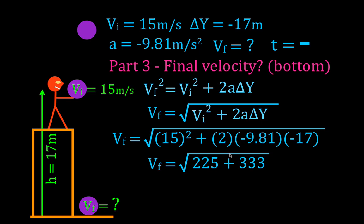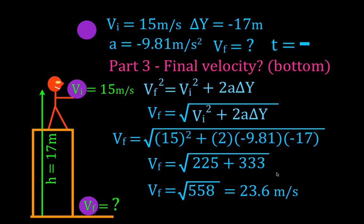Doing the math: 15 squared is 225, and two times negative 9.81 times negative 17 gives us 333. So the final velocity equals the square root of 558. Taking the square root of 558, the final velocity of the object is 23.6 meters per second when it hits the ground.